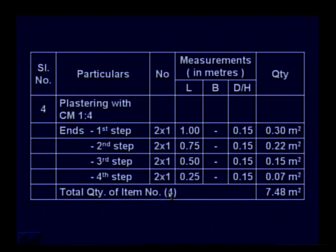The total quantity of item number four thus calculated is 7.48 square meters. Today we discussed detailed estimation of dog leg staircase, compound wall, and basement steps — including one-way steps, two-way steps, and three-way steps. We will conclude here and next class we will continue with the analysis of rates.